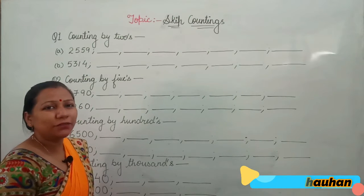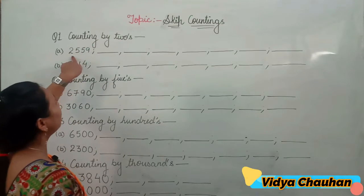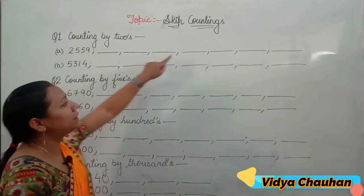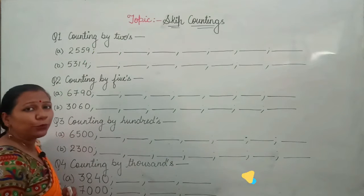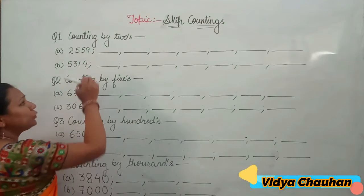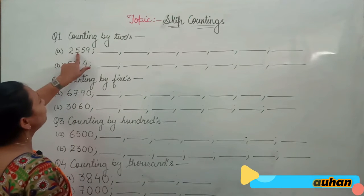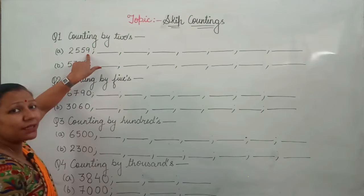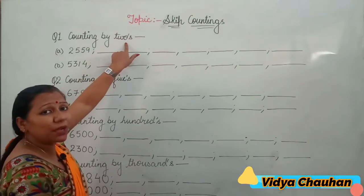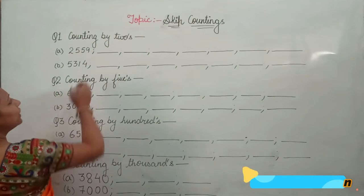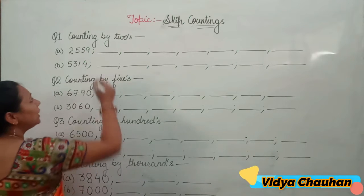The first question says counting by twos. You have to do skip counting by two. The first number is given and you have to write the next seven numerals. Since it is skip counting by two, it means every time you have to add two to the given number. So our first number is two thousand five hundred fifty-nine. Adding two to this value — fifty-nine plus two gives sixty-one.